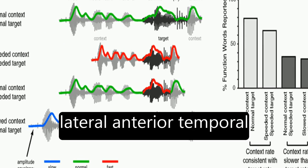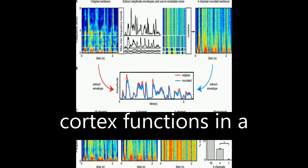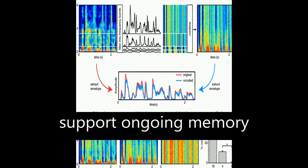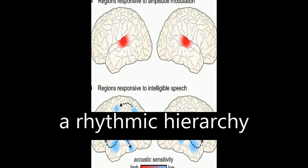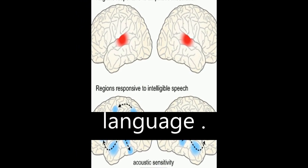It also proposes that lateral anterior temporal cortex functions in a domain-general fashion to support ongoing memory and integration of meaningful input, forming the foundation of a rhythmic hierarchy supporting spoken language.